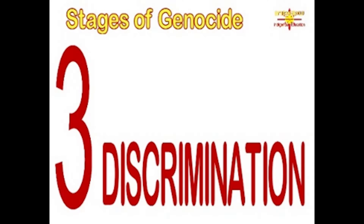Discrimination: A dominant group uses law, custom, and political power to deny the rights of other groups. The powerless group may not be accorded full civil rights, voting rights, or even citizenship. The dominant group is driven by an exclusionary ideology that would deprive less powerful groups of their rights. The ideology advocates monopolization or expansion of power by the dominant group. It legitimizes the victimization of weaker groups. Advocates of exclusionary ideologies are often charismatic, expressing resentments of their followers, attracting support from the masses. Examples include the Nuremberg Laws of 1935 in Nazi Germany, which stripped Jews of their German citizenship and prohibited their employment by the government and by universities.